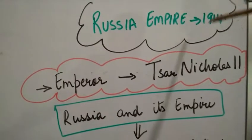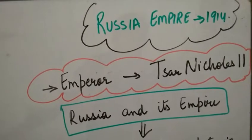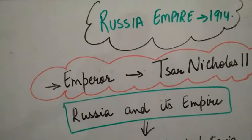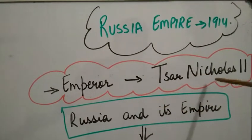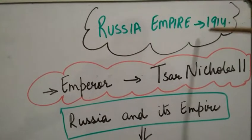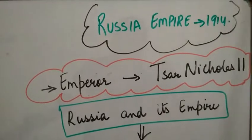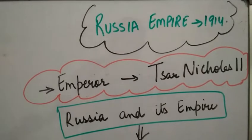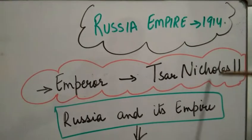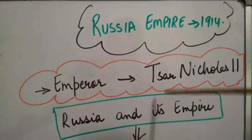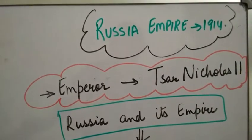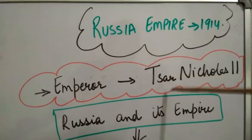Talking about the Russian Empire in 1914 — it was a monarchy, and the emperor at that time was Tsar Nicholas II. Tsar Nicholas II was the emperor of the Russian Empire during this period. Note: in 'Tsar,' the T is silent, so we pronounce it 'Tsar.' Time period is very important in history, so always be clear about which time period you are discussing.